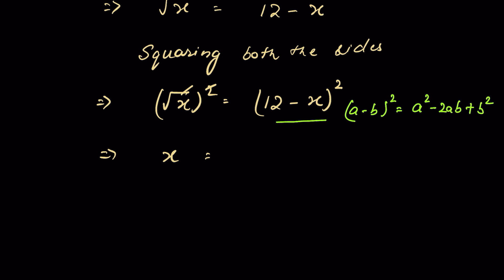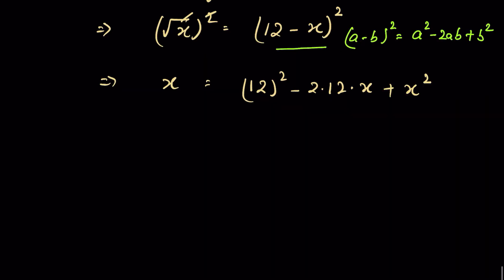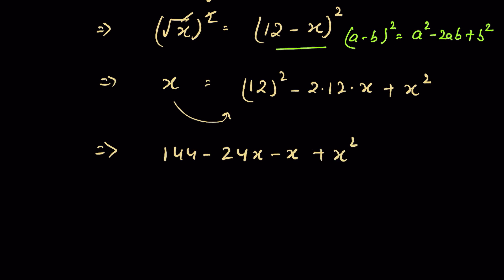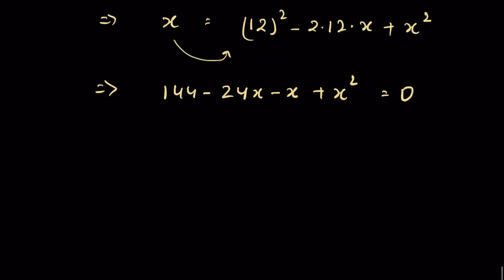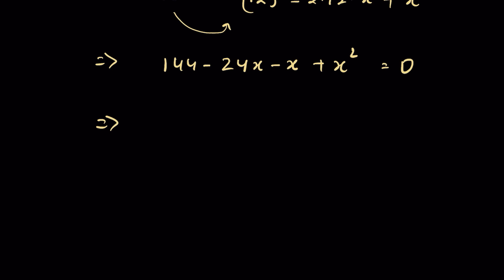Expanding: 12² minus 2 times 12 times x plus x². Sending x to the right-hand side gives 144 minus 24x minus x plus x² equals 0.